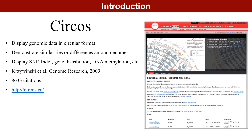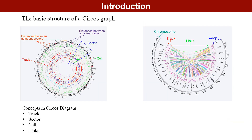Up to now, the original Circos has been cited 8,633 times. A typical Circos plot consists of multiple concentric tracks, each representing a different aspect of genomic data. Each track is divided into multiple sectors, which are organized in a circular manner, representing different genomic regions.